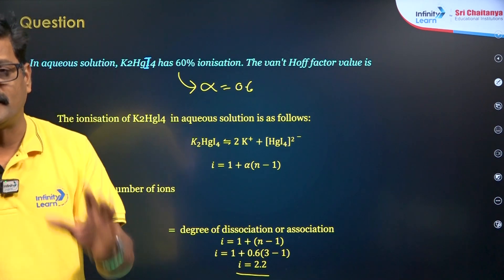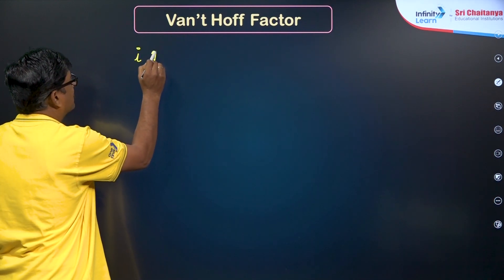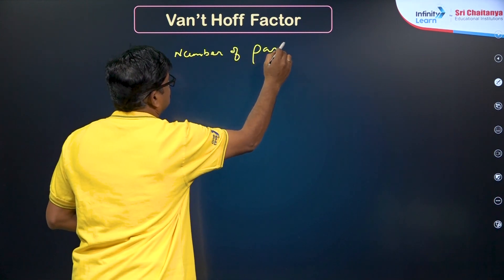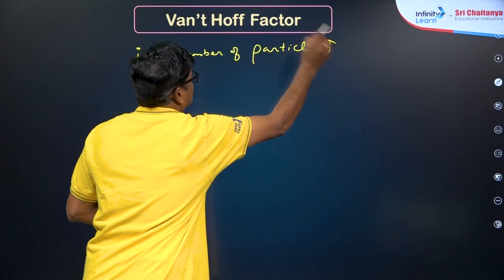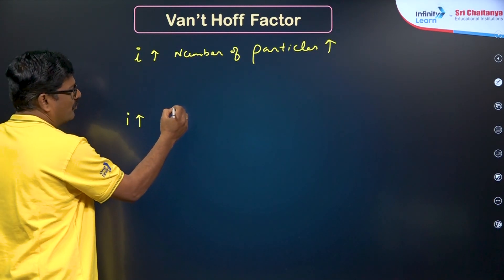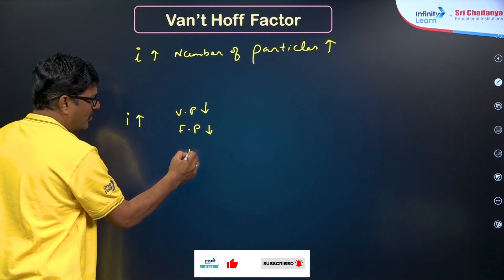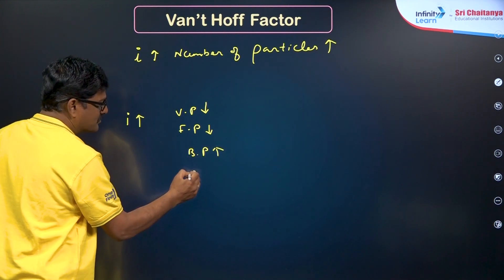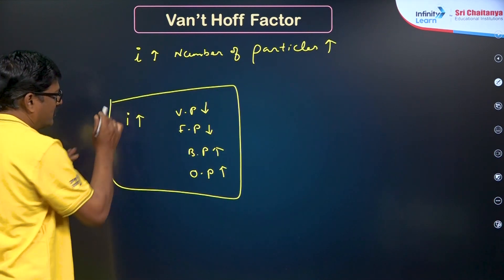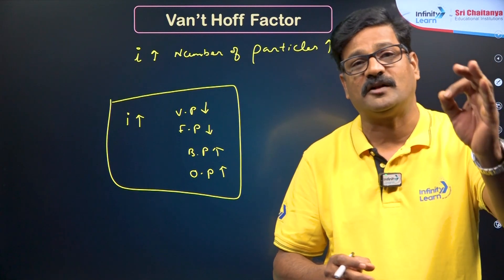An important point: as i value increases, the number of particles increases. As i increases, vapour pressure decreases, freezing point decreases, boiling point increases, and osmotic pressure increases. Based on this, you can determine the correct order of boiling points of given solutions A, B, C, D — a popular question type in the NEET examination.